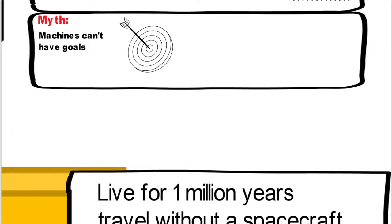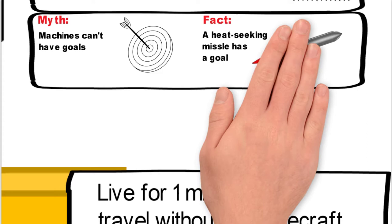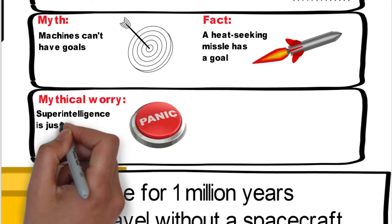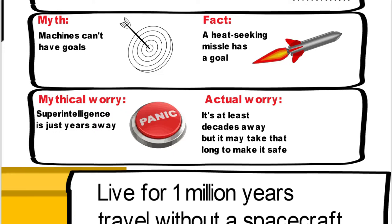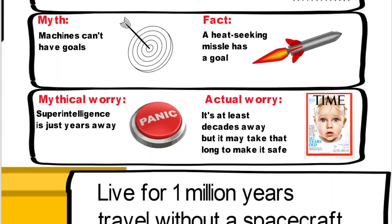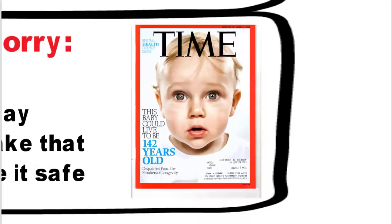Another myth is that machines can't have goals. Well, the fact is that a heat-seeking missile has a goal, and so machines actually can have goals. The mythical worry is that superintelligence is just years away, and it's kind of a panic button there. But the actual worry is that it's at least decades away, but it may take that long to make it safe.